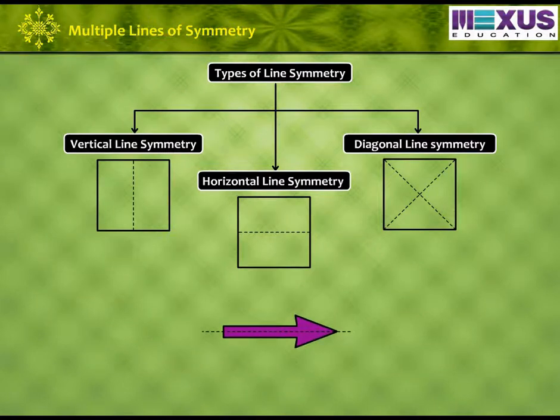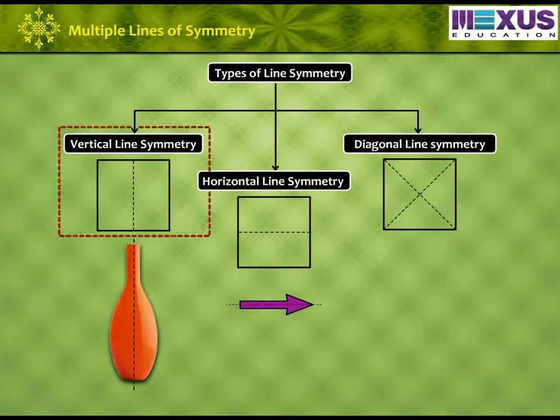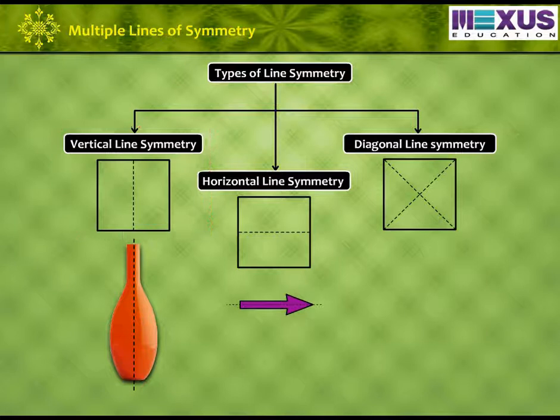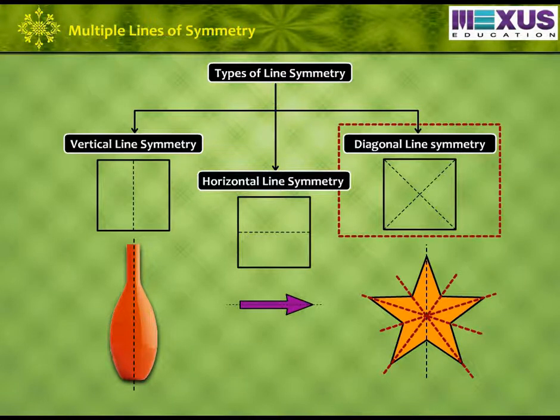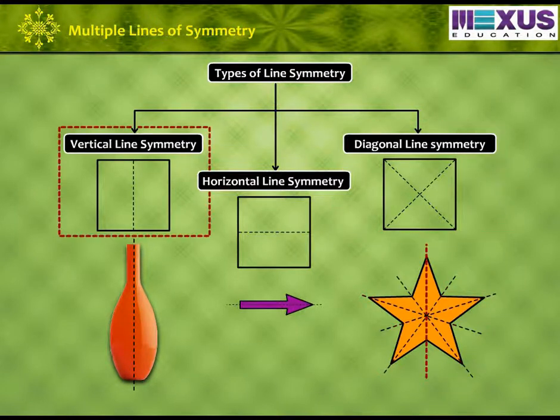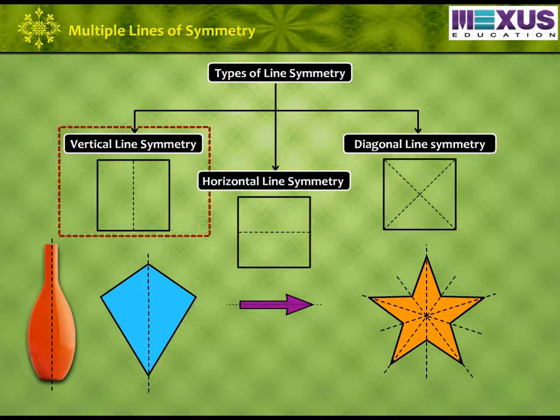Can you see this right direction arrow? It is in horizontal line symmetry. Look at this vase. It is in vertical line symmetry. Now, what about the star shape? It has multiple lines of symmetry. It has a diagonal line of symmetry. It also has vertical line of symmetry. Look at this kite. Can you tell me how many lines of symmetry does the kite shape have? This kite shape has only one line of symmetry. That is, vertical line of symmetry.